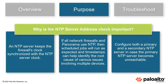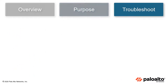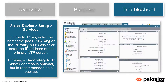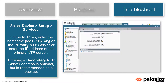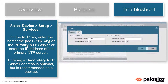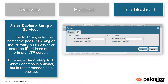Configure both a primary and a secondary NTP server in case the primary NTP server becomes unreachable. Select Device, Setup, Services. On the NTP tab, enter the hostname pool.ntp.org as the primary NTP server, or enter the IP address of the primary NTP server. Entering a secondary NTP server address is optional, but it is recommended as a backup.